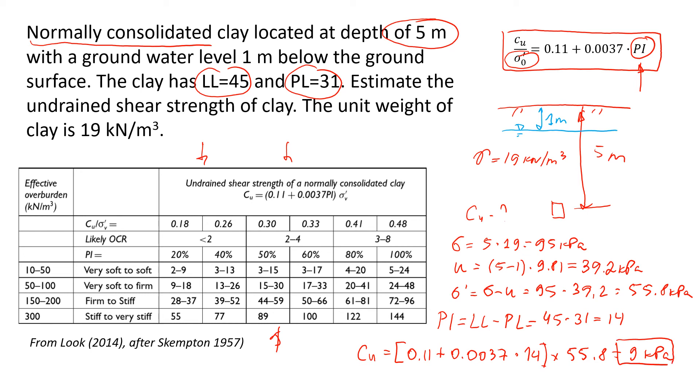Now what we can do is we can check in the table and see if it makes sense or not. So we have the plasticity index which is less than 20, so it's going to be in the low range of this column. And then we have effective stress about 55, so it should be somewhere in the low range of this value.